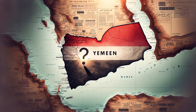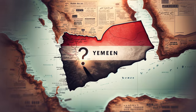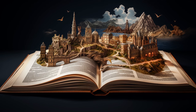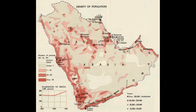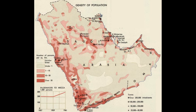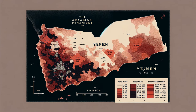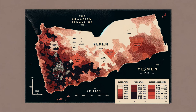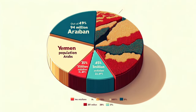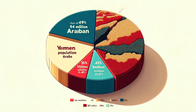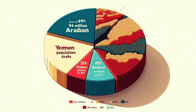Looking at the modern map of the Arabian Peninsula, it's not very clear why Yemen received so much attention in the news. To understand this, we must look back at history. Here's a map of the peninsula's population density in 1960, during British rule. At that time, nearly half of the population lived in what is now Yemen — 5 million out of 11. The balance has shifted since then, with 35 million living in Yemen out of 94 million Arabs, but this was primarily due to migrants.